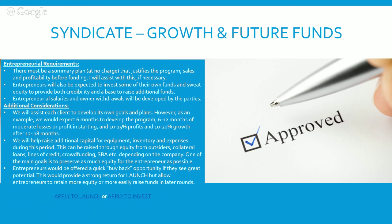The entrepreneur must have a summary plan and is expected to invest some of their own funds in sweat equity to provide both credibility and a base to raise additional funds. Salaries and owner withdrawals will be developed by both parties. There's also a buyback clause — entrepreneurs would be offered a quick buyback opportunity if they see great potential. If the negotiated equity seems like it's exploding, Bert is willing to do a buyback program, because it's not about making future investments harder with a cap table that might not be worth it. The goal is simply to grow, market, and get to the next level of funding.